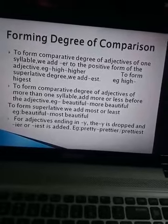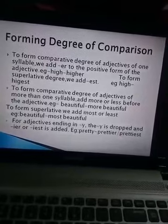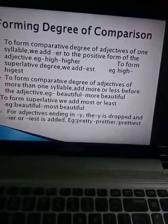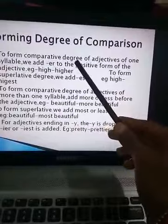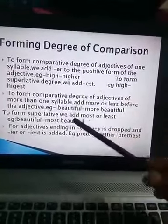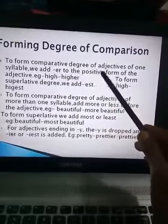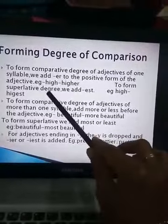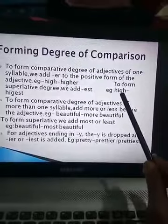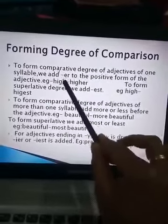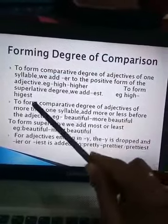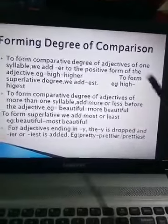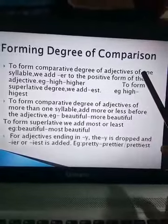Now we will start forming degrees of comparison. We can convert from positive to comparative and superlative. When we have to change positive to comparative, we add '-er' to the positive form of the adjective. For example, 'high' becomes 'higher.' To form superlative degree, we add '-est,' so 'high' becomes 'highest.' This applies when the adjective contains only one syllable.